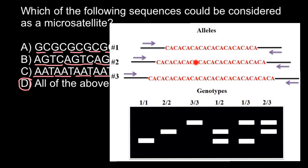These variable DNA fragments are surrounded by stable DNA, so we can design primers and replicate — multiply those fragments using PCR. In about 30 cycles we can get billions of copies.